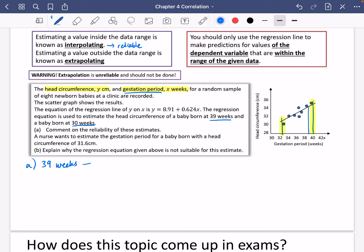So 39 weeks - this should be, rather than will, this should be reliable as it is inside the data range. This is interpolation, and interpolation is reliable.